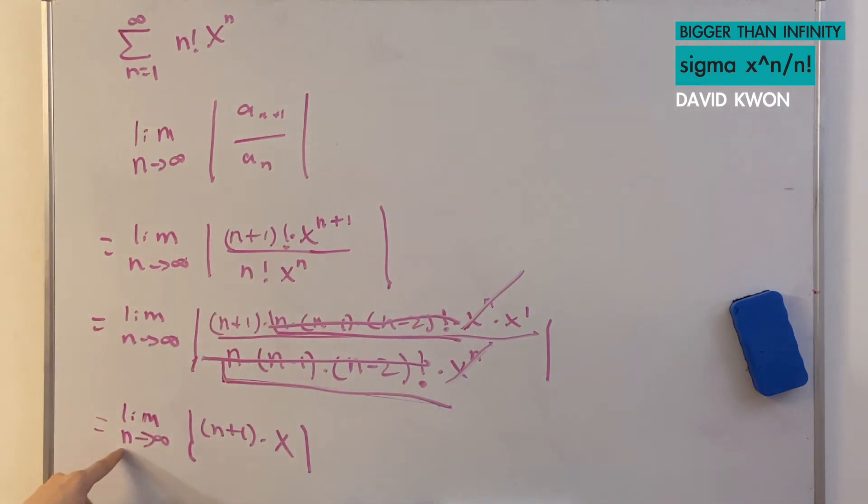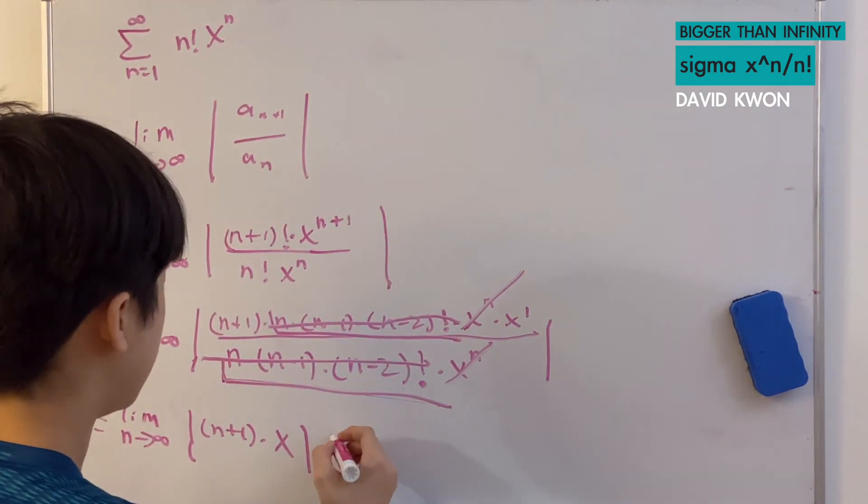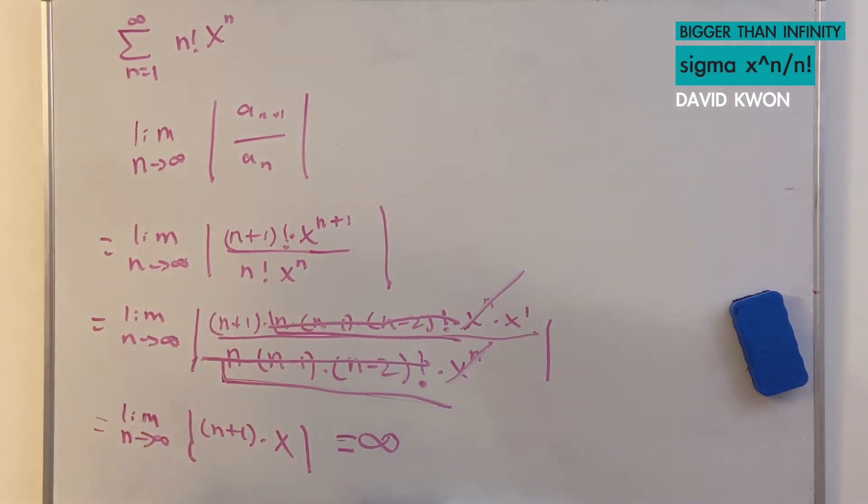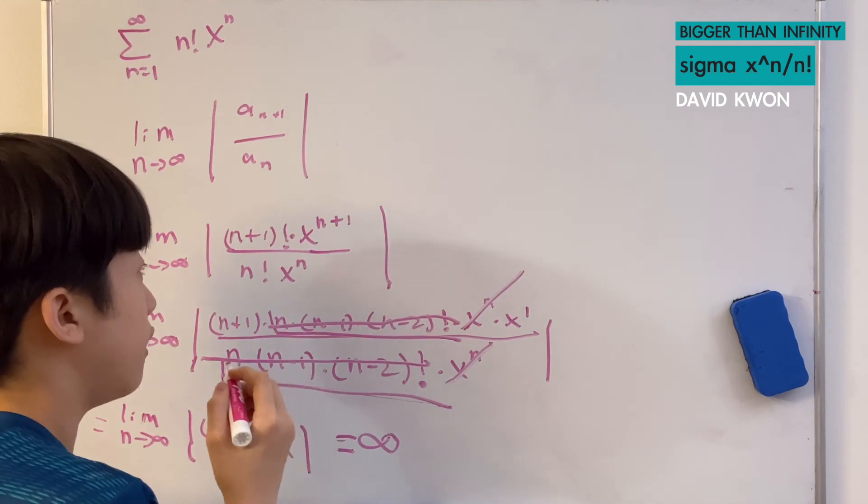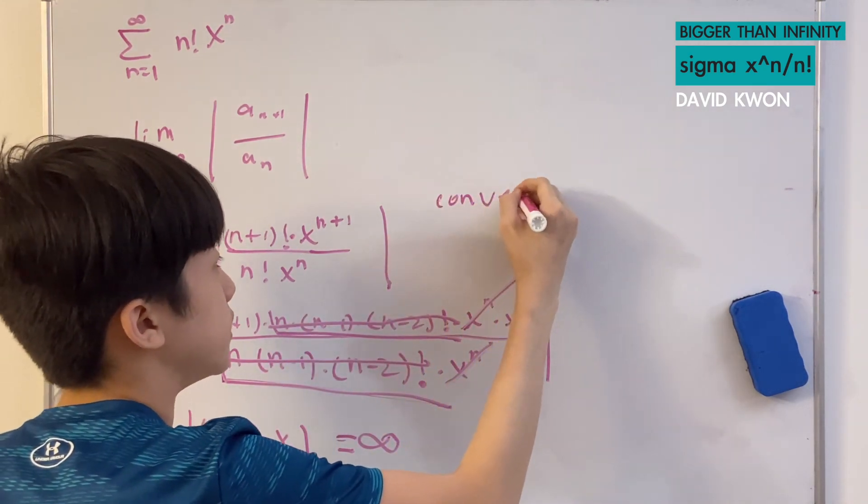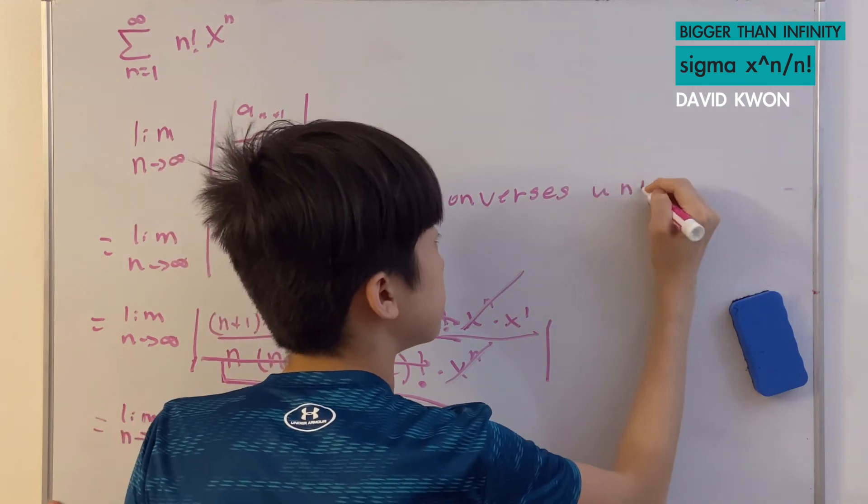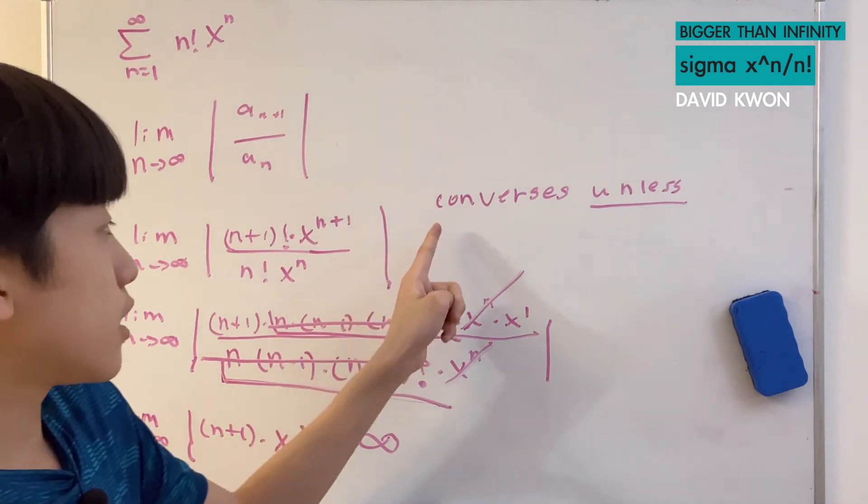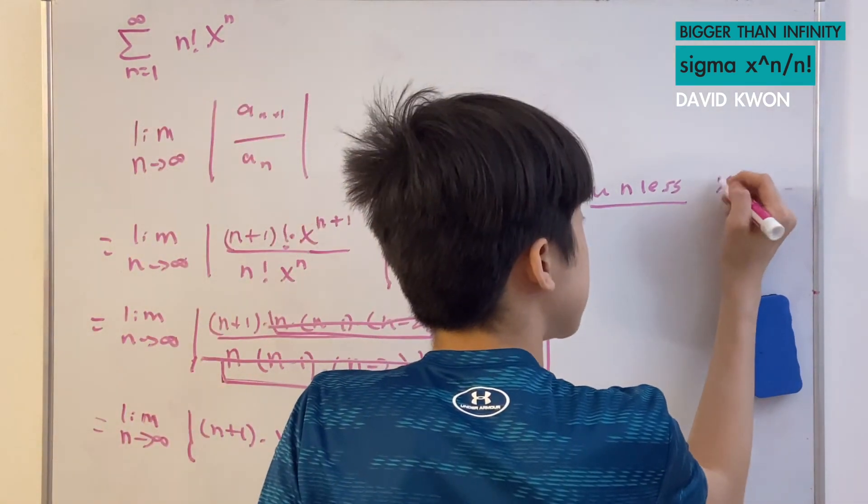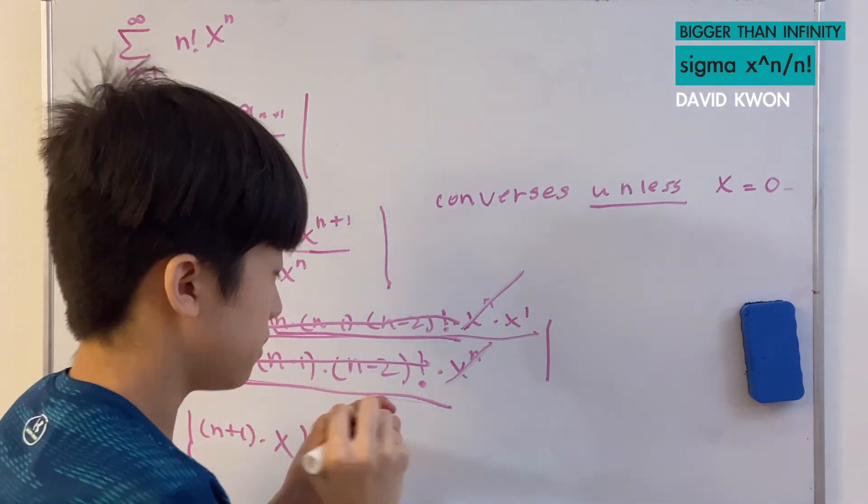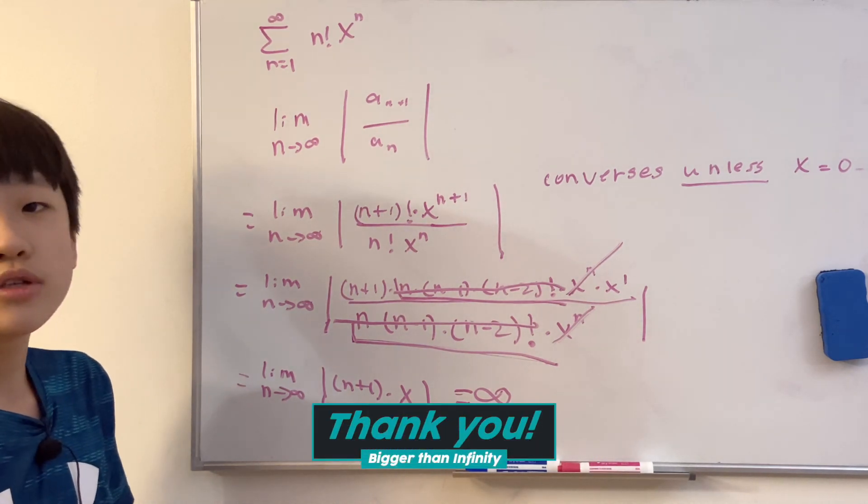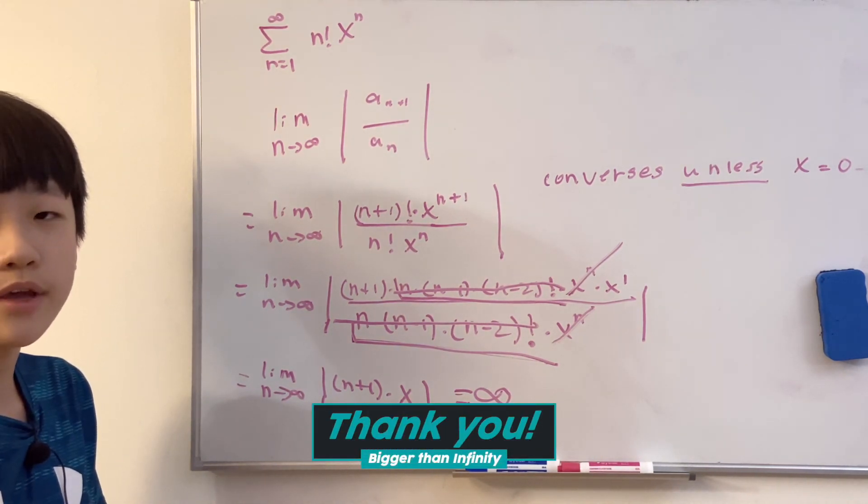When n approaches infinity, we get infinity as well. That's very weird. It converges to infinity. That doesn't make any sense. Because it only converges unless x is equal to 0. A nice, very pleasant finishing. Thank you guys so much for watching and see you guys in the next video. Bye.